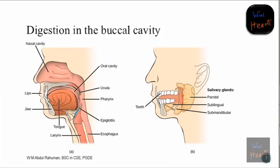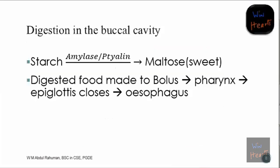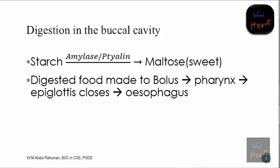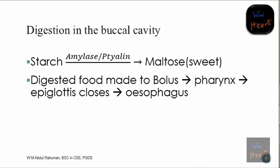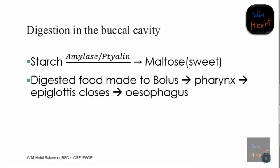Digestion in the buccal cavity has two parts - mechanical and chemical. The mechanical process is chewing using the teeth. For the chemical part, starch is converted to maltose. For example, if you eat fresh rice and munch it for some time - two or three minutes - without any curry, it becomes a bit sweet.